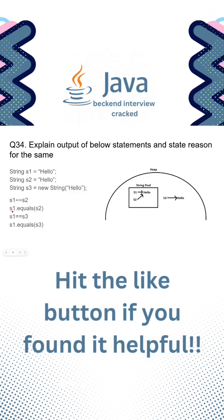Another will be s1.equals(s2). This will also be true because their contents are the same. So here, s1 is hello, s2 is also hello, so it will be returning true.